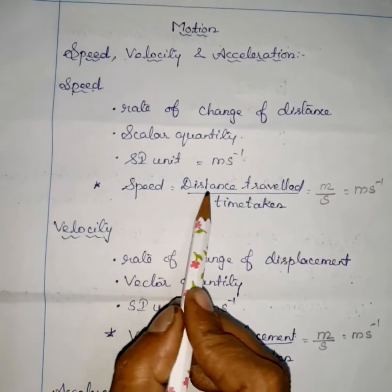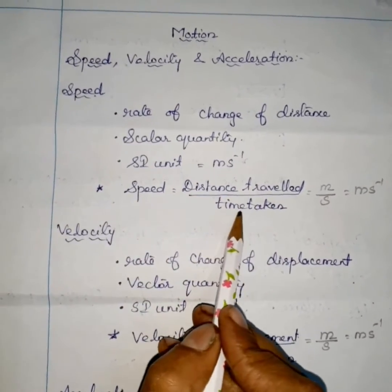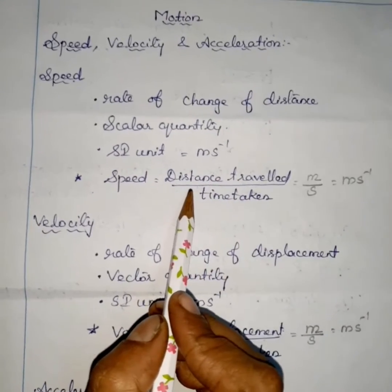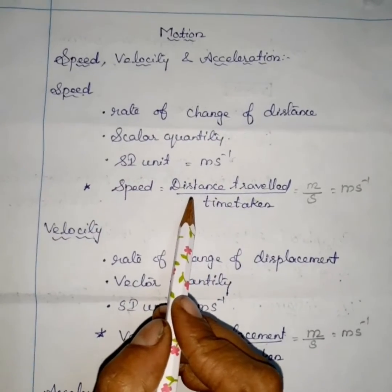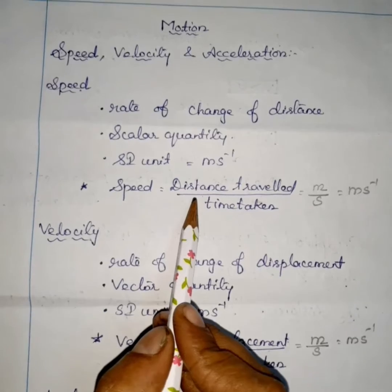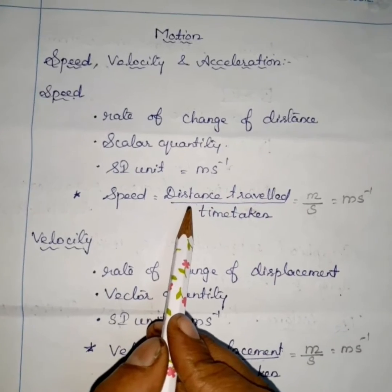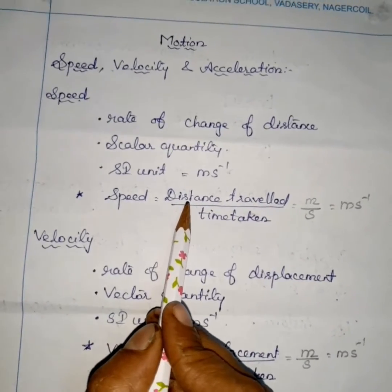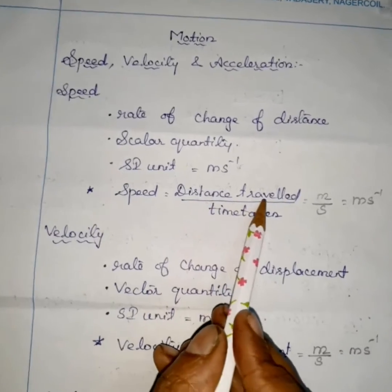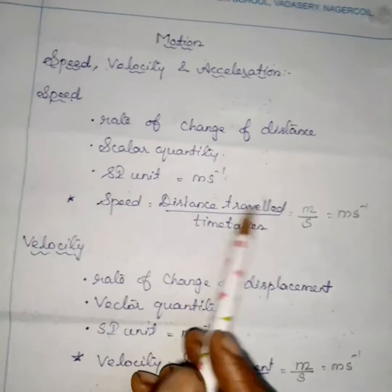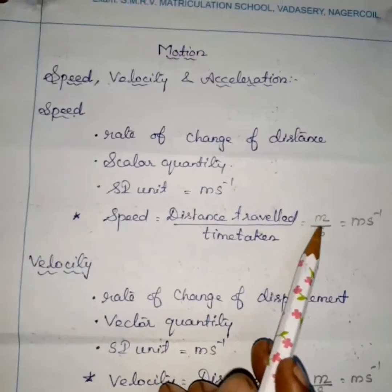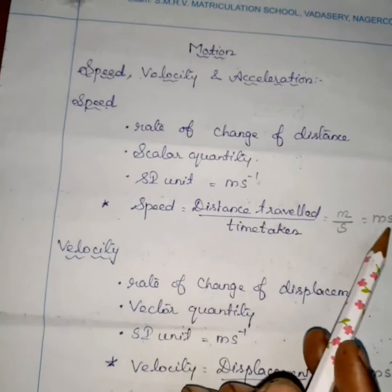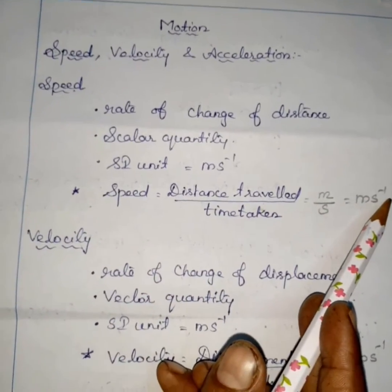Speed is equal to distance traveled by time taken. Distance is the actual length of the path traveled by a moving body. So distance divided by time gives meter per second, which is meter second power minus one.